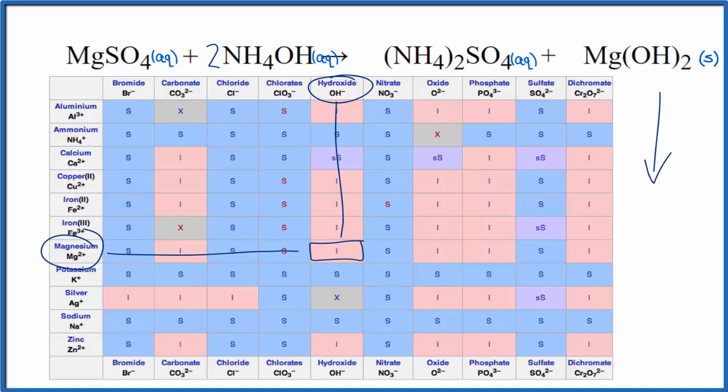So when we mix MgSO4 and this NH4OH together, we should get a solid. Let's see if that happens.